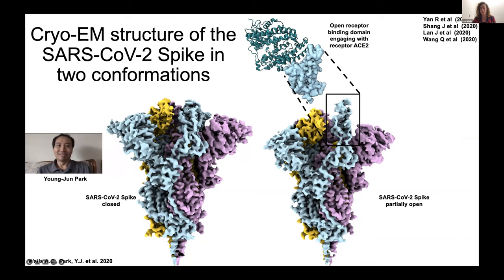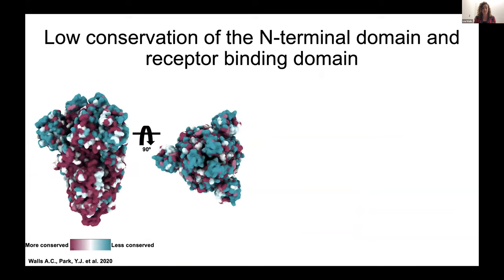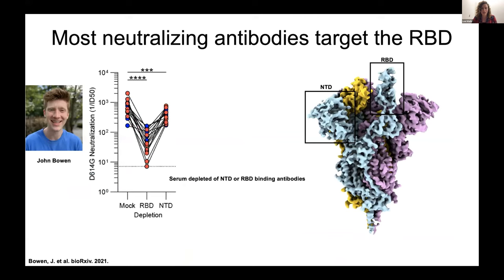We kind of had two classes of images coming out — one where the spike is in a closed conformation and one where it's slightly more open. We characterized this in previous coronaviruses: a down and up conformation, or closed and open. The piece of the spike protein that's up in the open conformation is specifically the receptor binding domain. The receptor binding domain is extremely important both for the virus and for what I'm talking about today. It's important because it is the mechanism by which the spike protein — and therefore the virus — actually attaches to host cells and enters them. A crystal structure overlaid with ACE2, the human receptor that SARS-CoV-2 uses to enter our cells, shows this interaction.